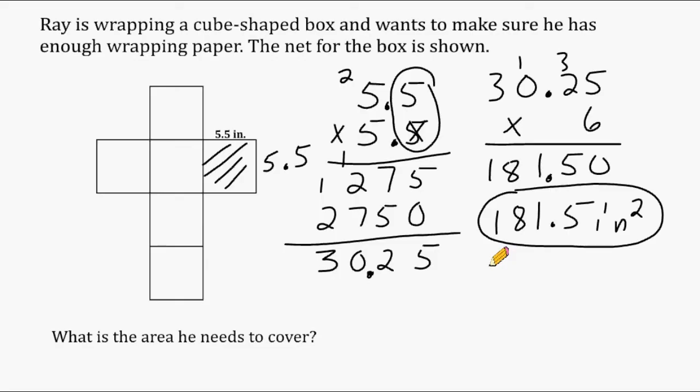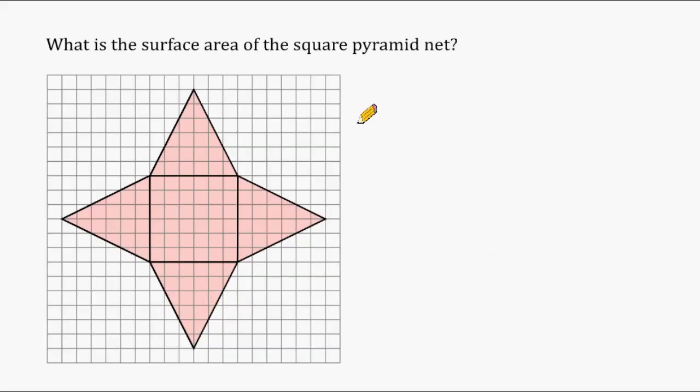Alright, let's do another example. We have to determine the surface area of the square pyramid by using the grid that it's located upon. One thing we should know about any square pyramid is that it is composed of 5 surfaces. 4 of the surfaces are 4 congruent triangles and the base is a square.